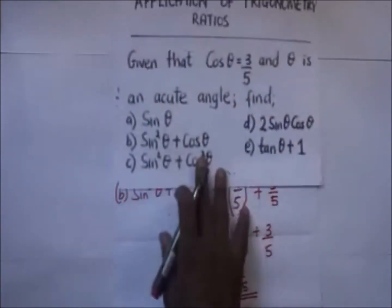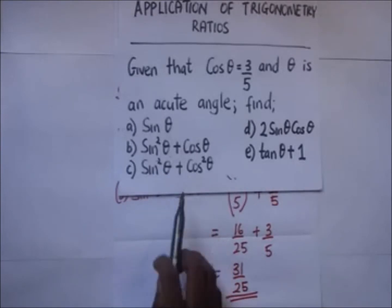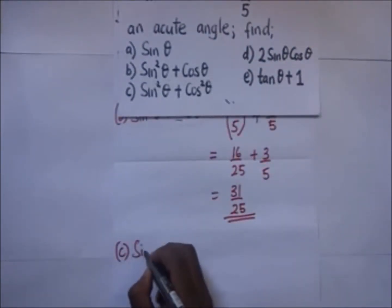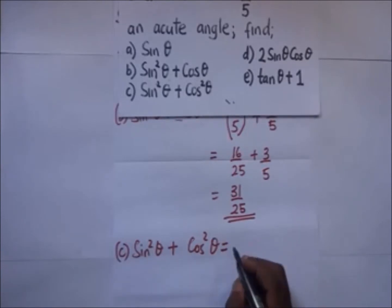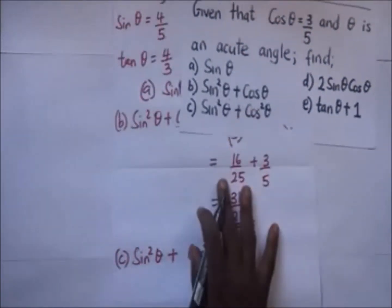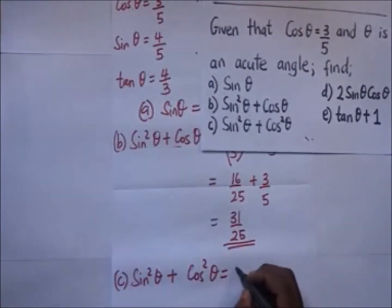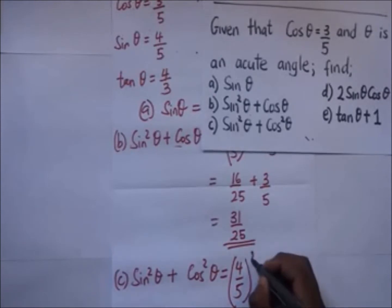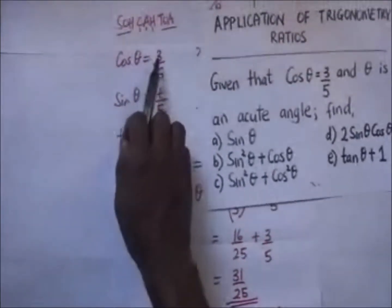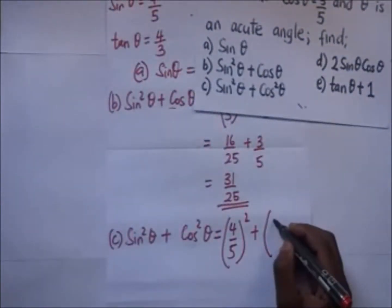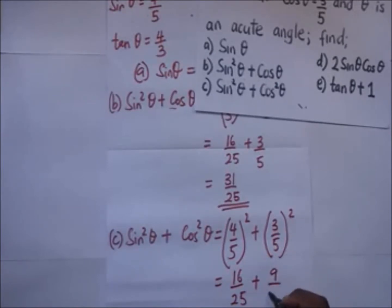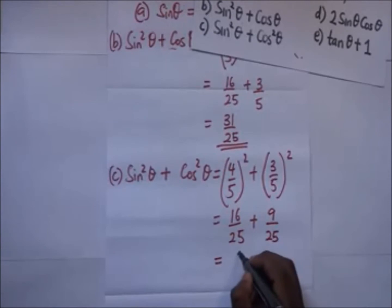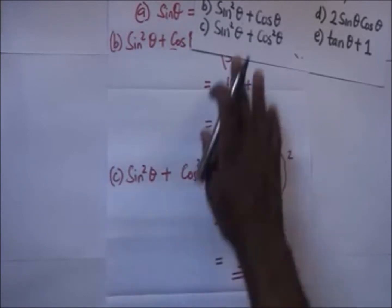Part c: sine squared theta plus cosine squared theta. Sine squared theta is four over five squared, which equals sixteen over twenty-five, plus cosine squared theta which is three over five squared, giving nine over twenty-five. Sixteen over twenty-five plus nine over twenty-five equals one. So part c equals one.